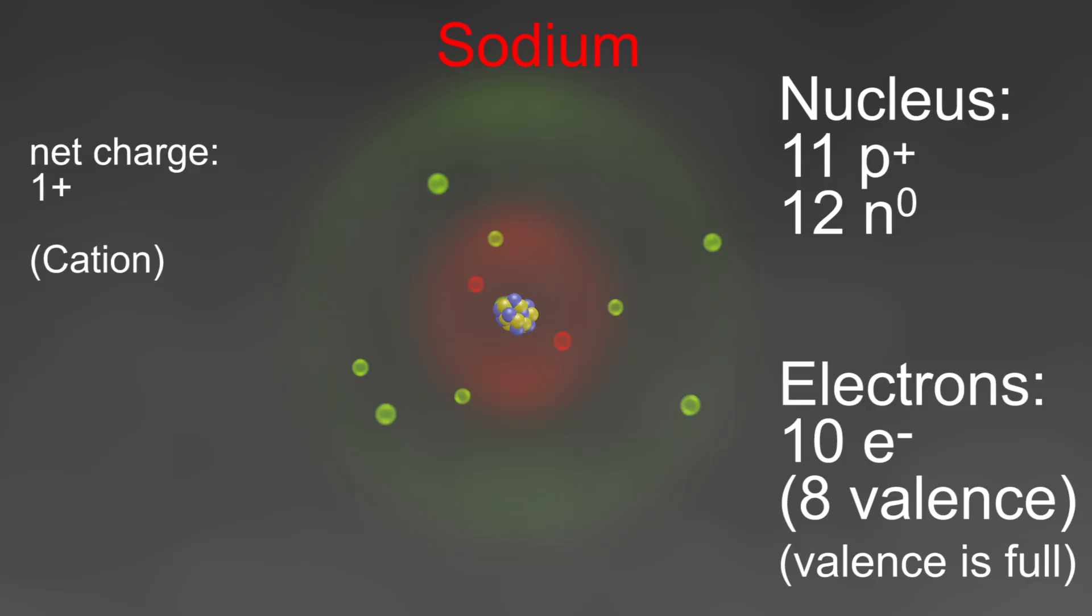And since it has a positive charge of plus one, it can react with something that has a negative charge of negative one. So this is what an ion is and how it is used in chemical reactions.